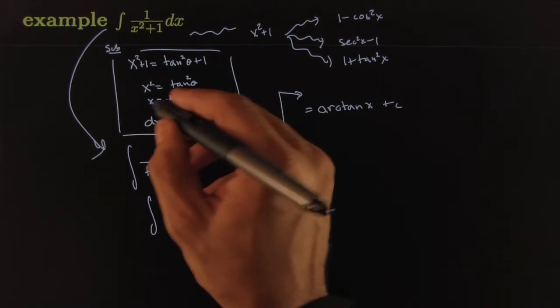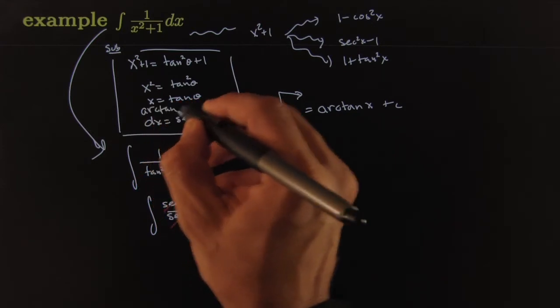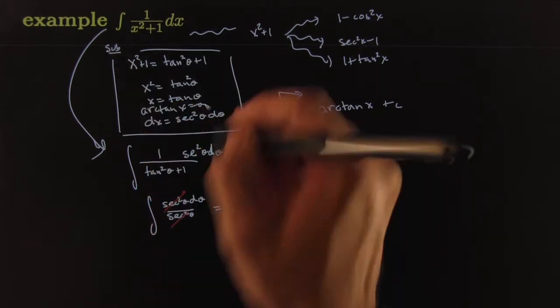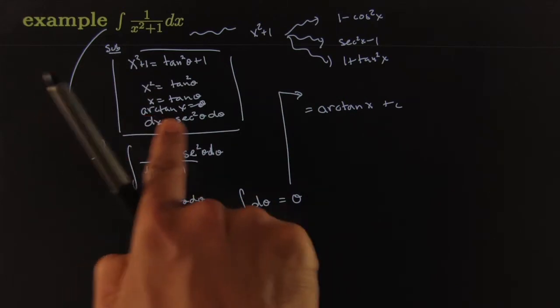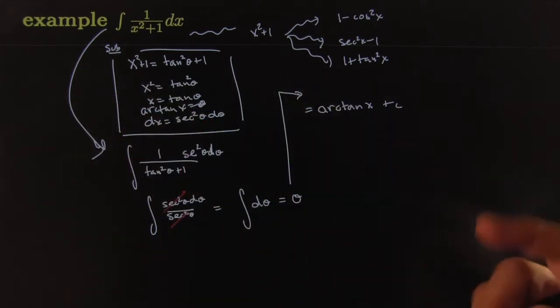This means that arc tangent of x equals theta. Theta is the angle that when you take the tangent of it, you get x. That's what that means. Theta is the arc tangent of x. And then you're done.